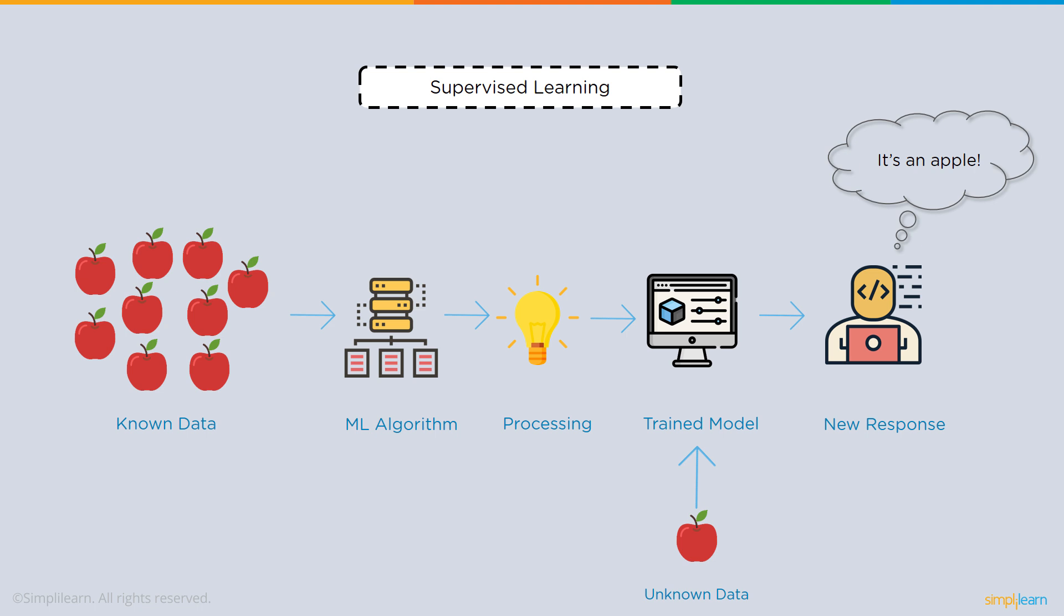In supervised learning, we have a known amount of data. In this case we have a bunch of apples. We have a machine learning algorithm that processes it and trains a model based on that known data. Once you've trained your model on the known data, you can then put unknown data in and get a new response. In this particular case, it's trying to figure out whether it's an apple or another fruit.